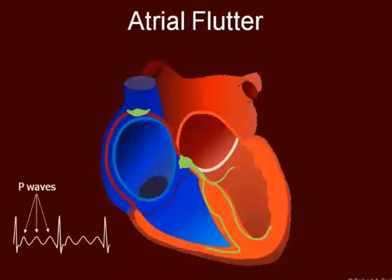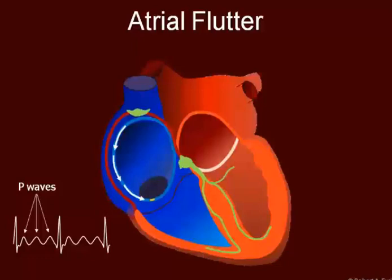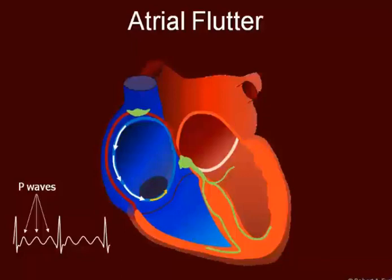Atrial flutter is often considered a re-entry tachycardia, although it is not re-entry in the strictest sense. Atrial flutter occurs because of a premature contraction. The most common form occurs in the right atrium and is counter-clockwise. A rarer form causes a clockwise rotation, and even more rarely, the circuit occurs in the left atrium. Here we see the circuit coming around, with a slow pathway in orange, coming back up again, then running down through the AV node to the ventricles.